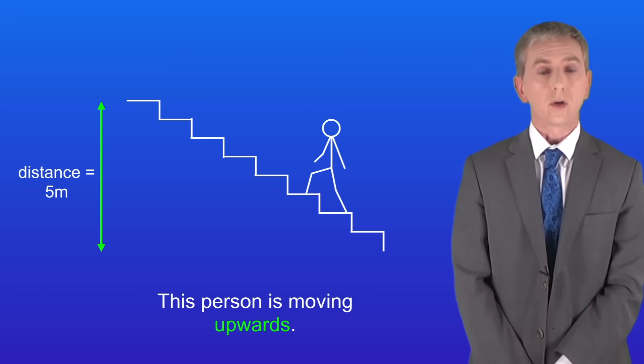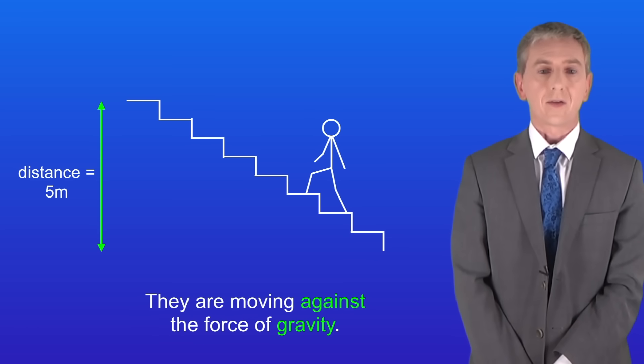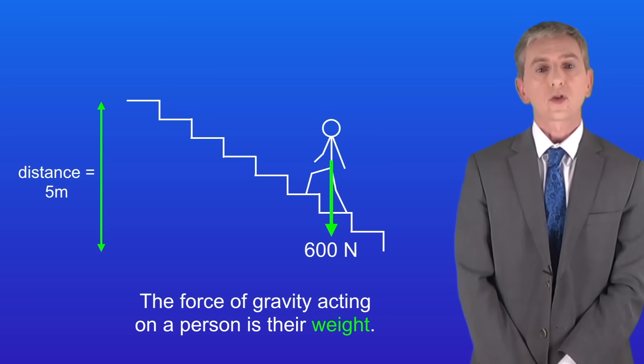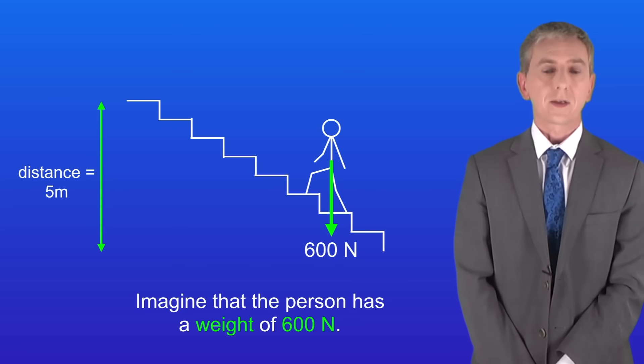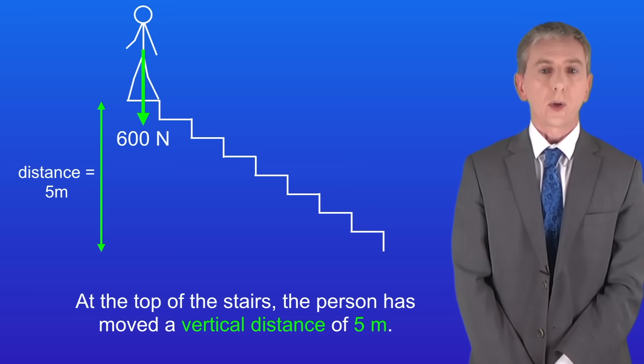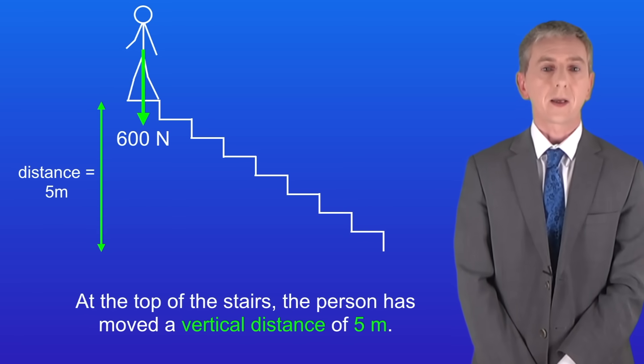Now this person's moving upwards. In other words they're moving against the force of gravity. Remember that the force of gravity acting on a person is their weight. So I'm showing their weight here. Imagine that the person has a weight of 600 newtons. At the top of the stairs the person's moved a vertical distance of 5 meters.